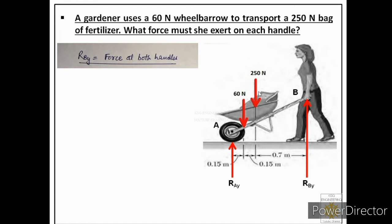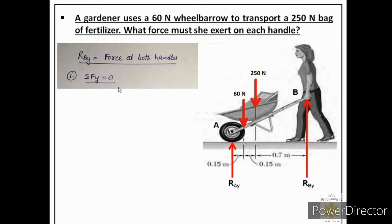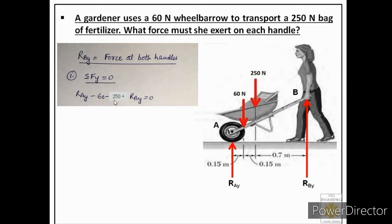This body is in equilibrium — it is not moving in the X or Y direction and it is not rotating — so three equations are applicable. We skip summation Fx = 0 since there are no horizontal forces. Applying summation Fy = 0 with four forces: RAY − 60 − 250 + RBY = 0. This has two unknowns, so we call it equation number 1 and proceed to the moment equation.